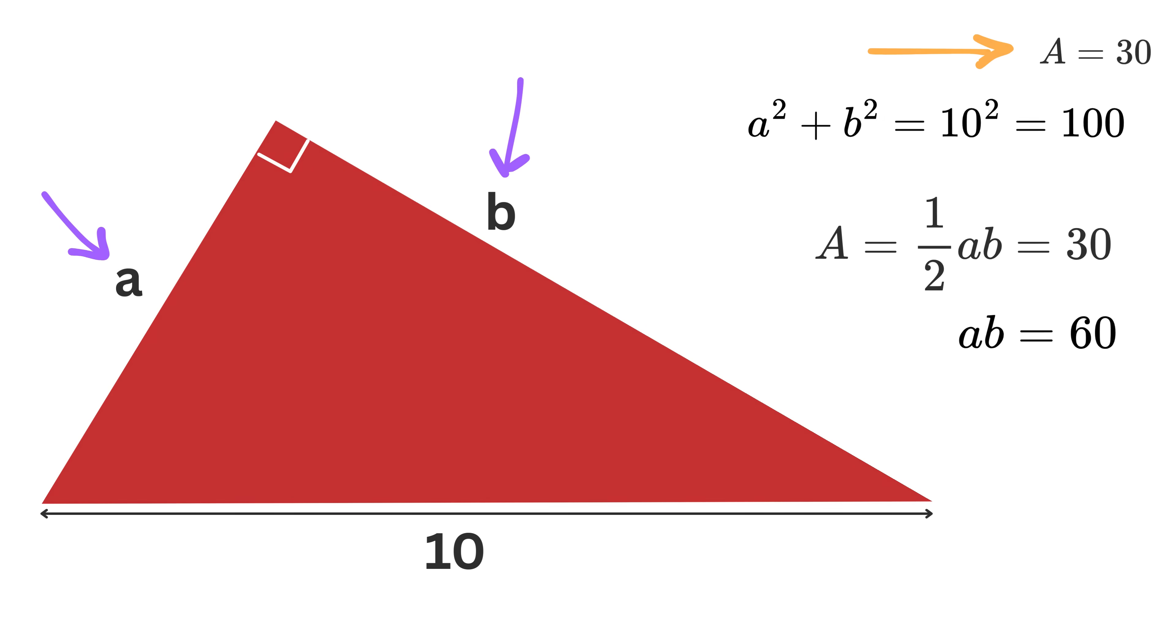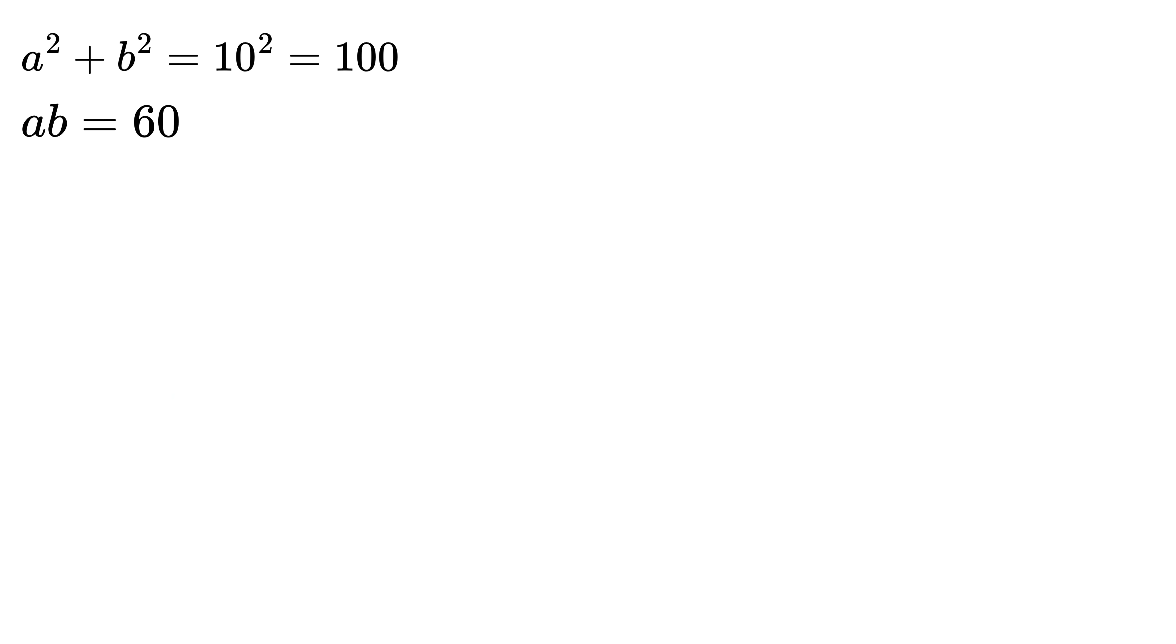We have two equations and two unknowns, and we can solve for A and B. Write B as 60 over A and substitute it here. We get A square plus 60 square over A square equals 100. Multiply both sides by A square to remove the denominator.